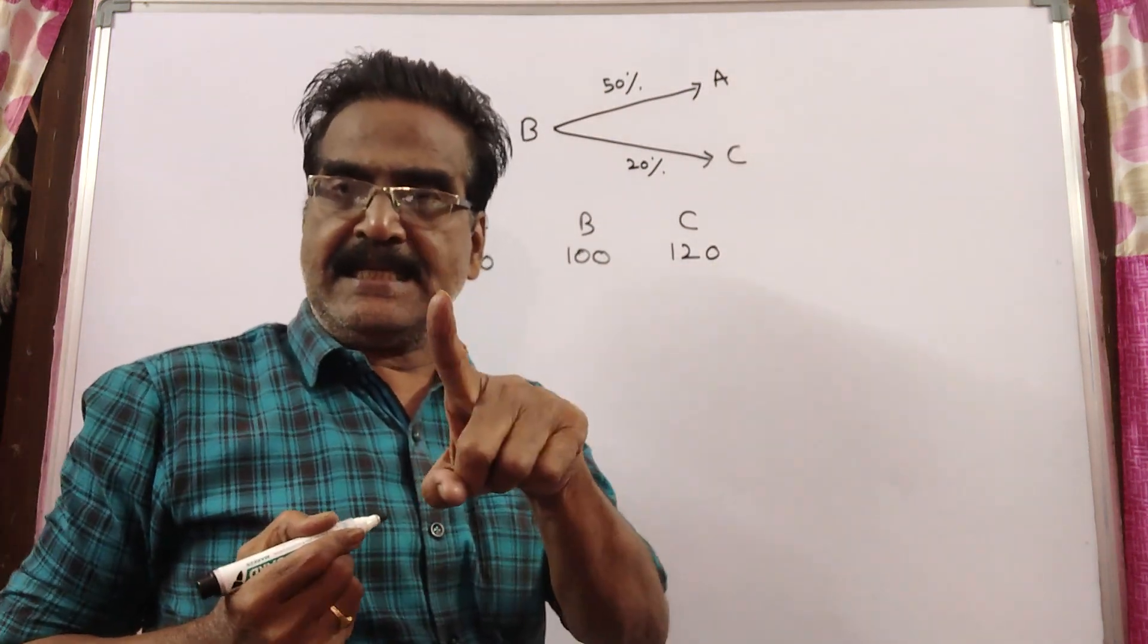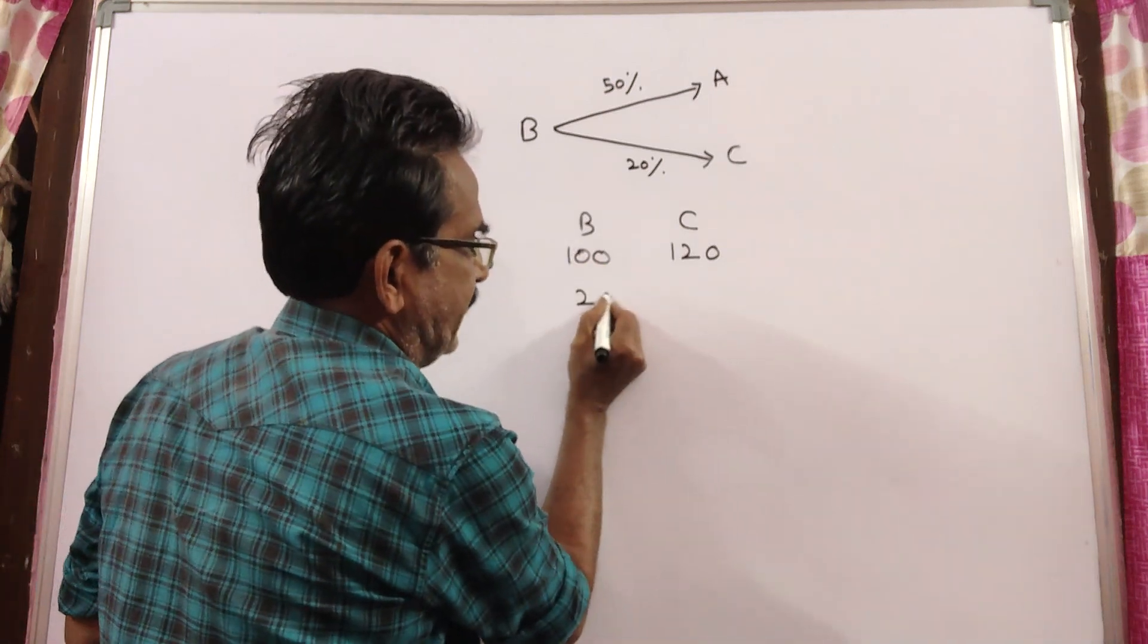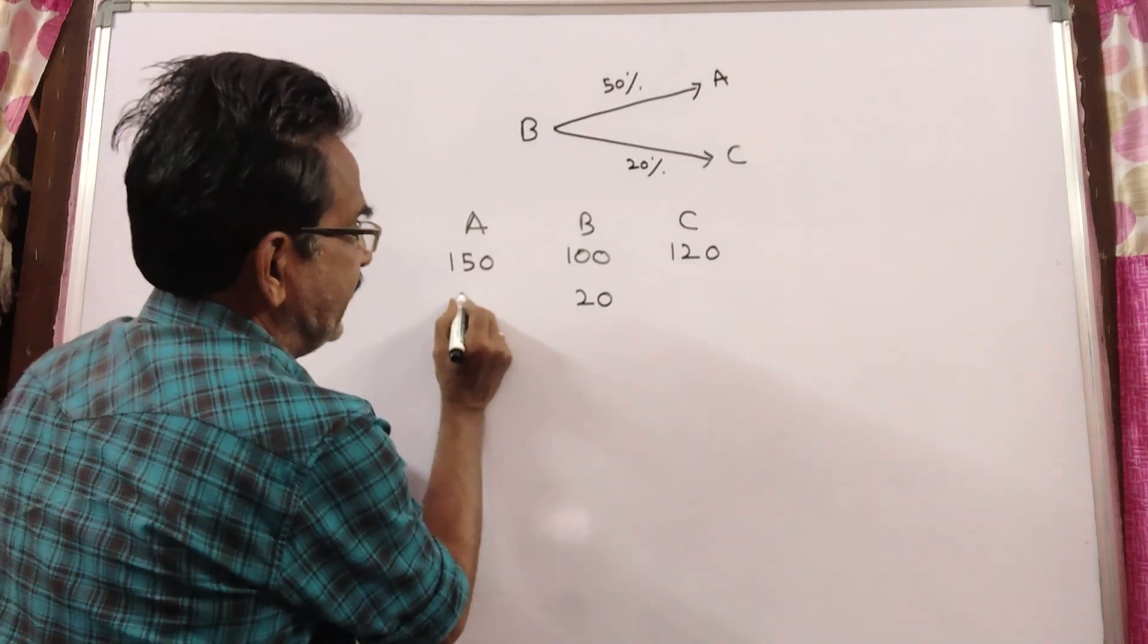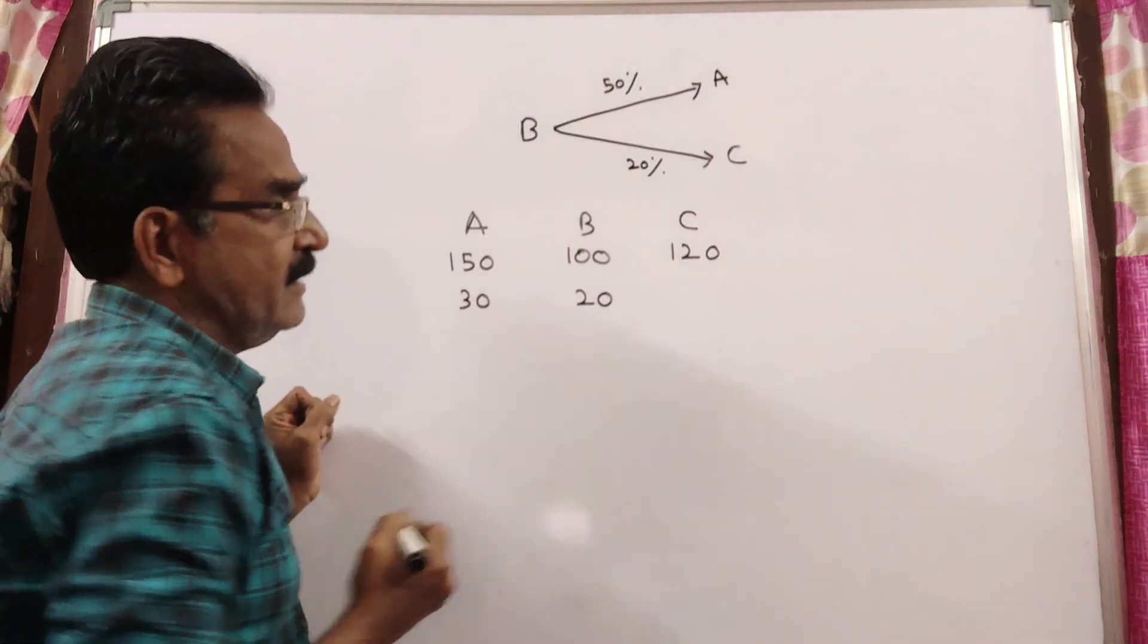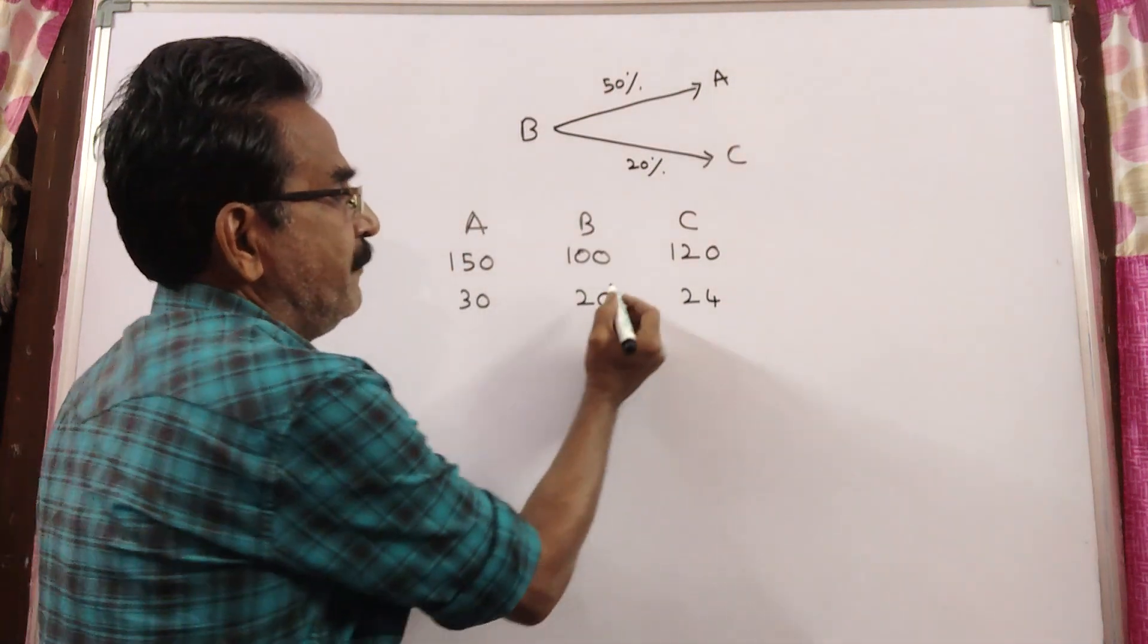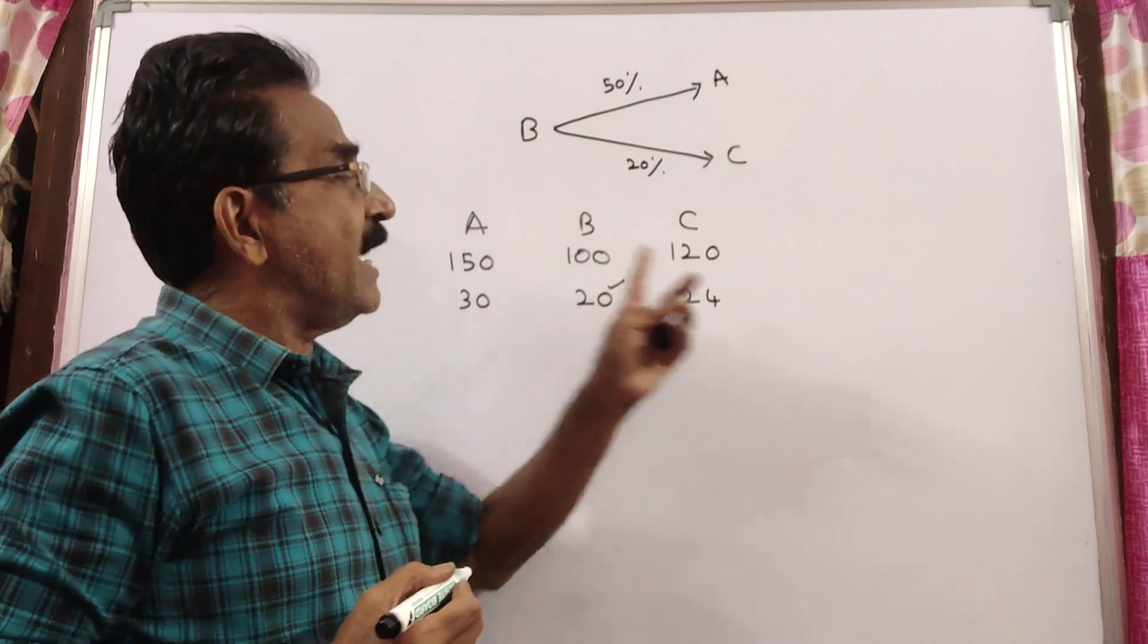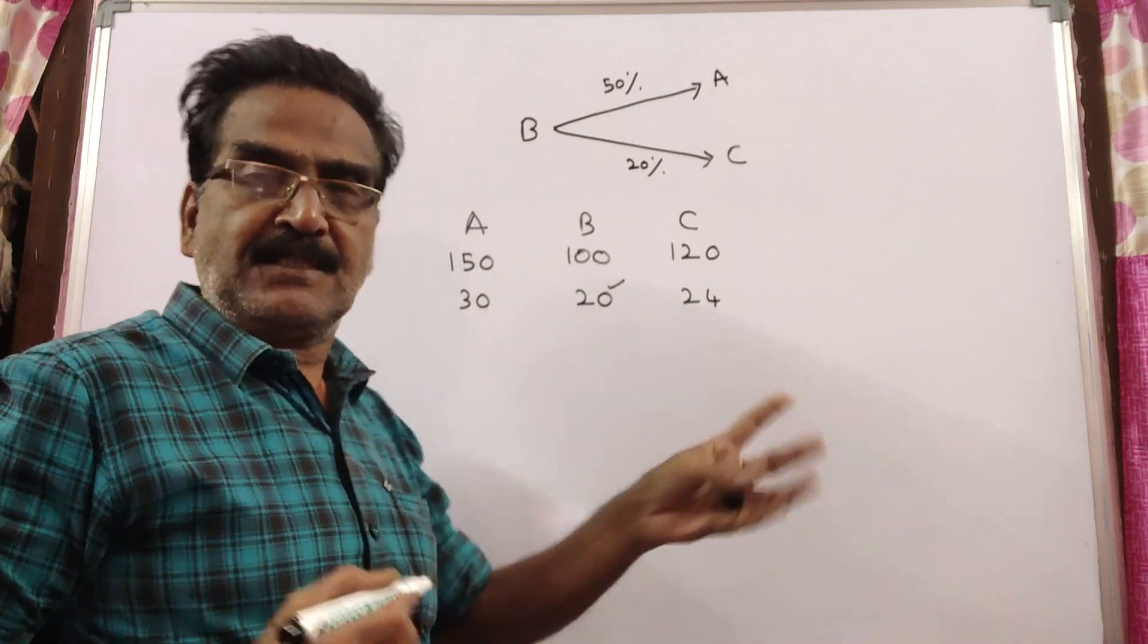Now, it is given that B takes 20 days to complete the work. So, if B takes 20 days, 5 times 20 is 100, then A takes 30 days, C takes 24 days. So, if B takes 20 days to complete the work, A takes 30 days and C takes 24 days.